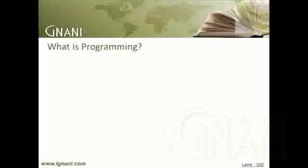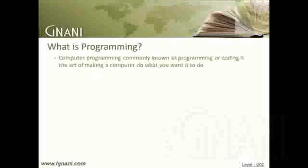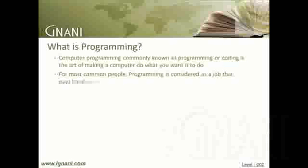What is programming? Computer programming, commonly known as programming or coding, is the art of making a computer do what you want it to do. Programming, in very simple terms, is about writing programs — a sequence of instructions written to perform a specified task for a computer, commonly known as a program, but also referred to as a software program or computer program. A computer being just hardware requires instructions to act upon, and these instructions are executed in the computer's CPU. Over the years, for most common people, programming is considered as a job that pays a very huge salary for writing something which they don't have a clue of.